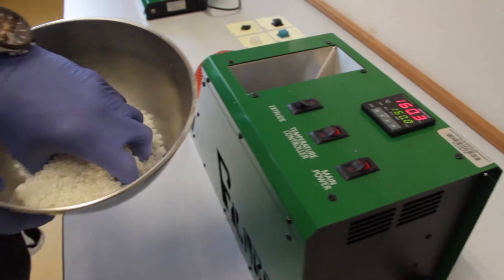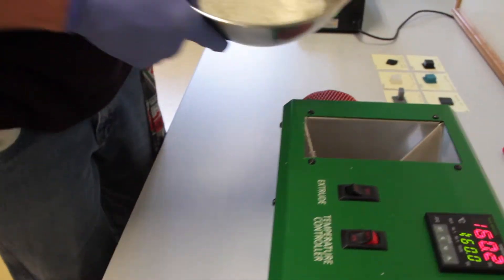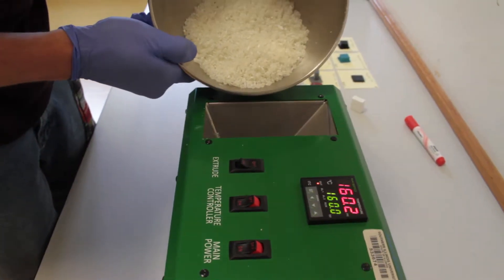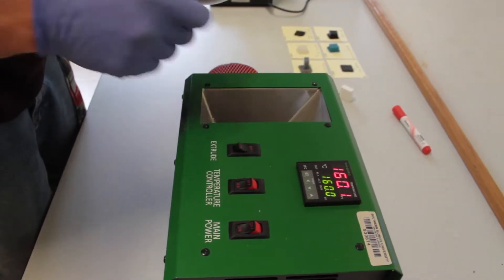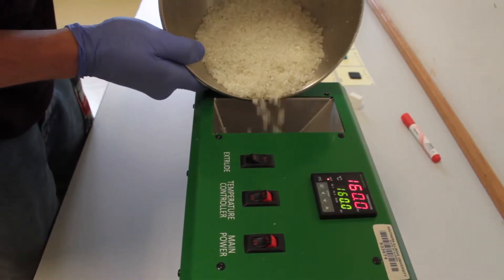So we've got the mixture here, mixed it all nice and well, and we're going to start pouring it in. You're going to want to make sure your extrude button is off at this point. You're going to turn that on later.